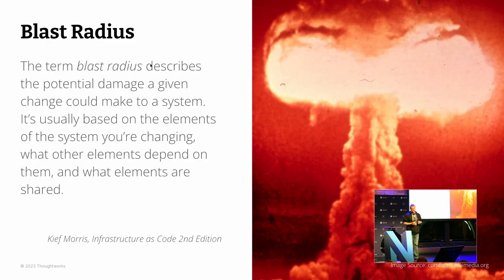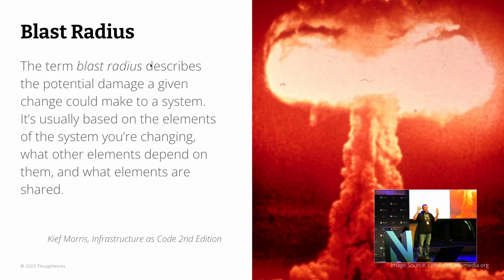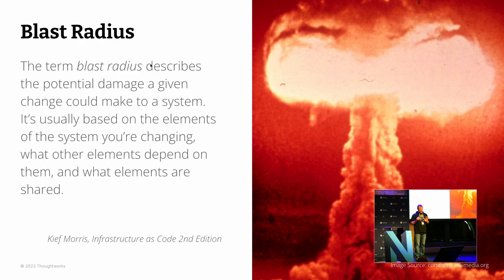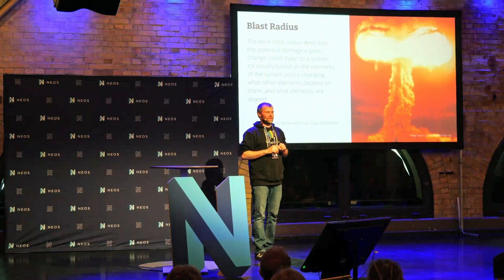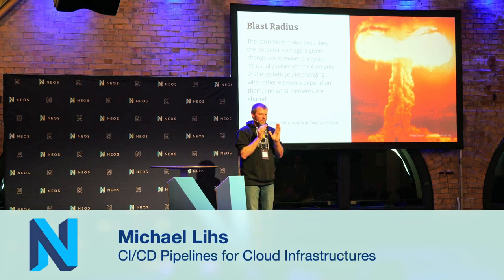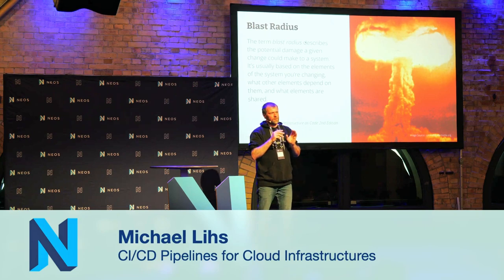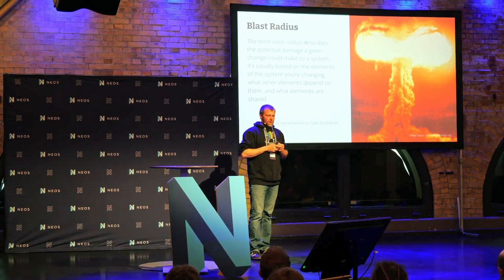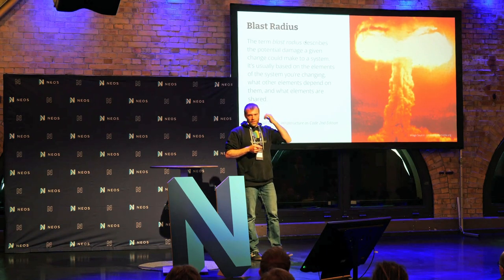Second challenge: blast radius. You can differentiate between two types of cloud resources — those without state and those with state. Those with state are the evil ones. A database accidentally deleted is a mess even if you have a backup. Anything that requires careful post-provisioning configuration that carries state from version to version is tricky. Again, reduce the blast radius by finding small slices through your infrastructure, reducing the impact when things go wrong. And whenever possible, use stateless resources.